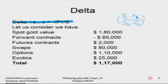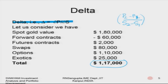You have a forward contract with a net value of minus ninety thousand depending on the direction of price fluctuation. There is a set of futures contracts with a value of two thousand, a swap of eighty thousand, an option with a value of one lakh ten thousand, and exotic options with a value of twenty-five thousand. The total net value of the portfolio is one lakh seventeen thousand.